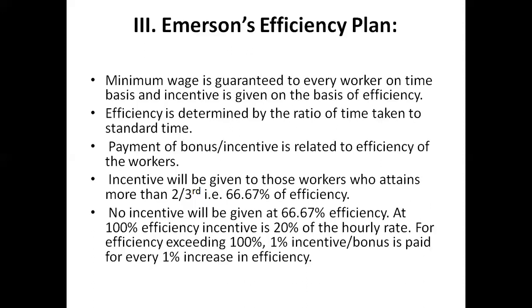For example, if a person's hourly rate is 3 rupees and the job takes nine hours, his basic wages are 3 × 9 = 27 rupees, and he will be paid wages plus 20% of the hourly rate as incentive. Additionally, 1% incentive bonus is paid for every 1% increase in efficiency above 100%.